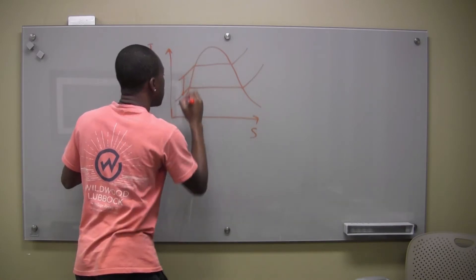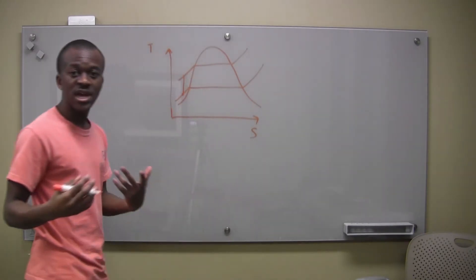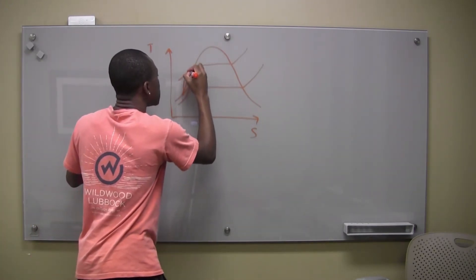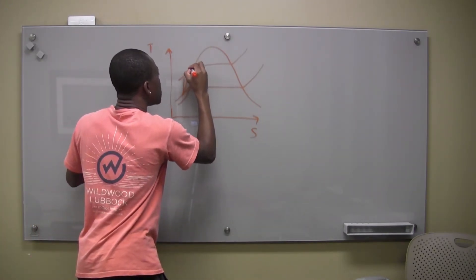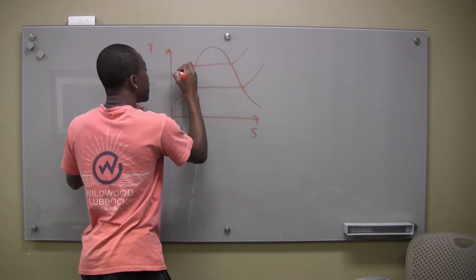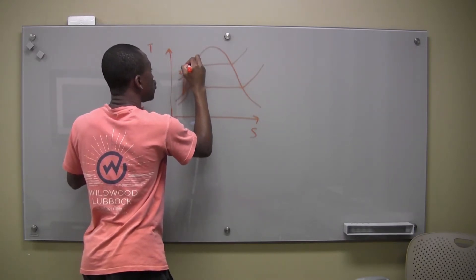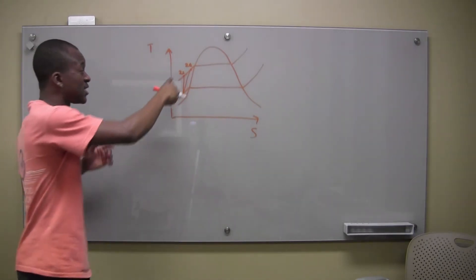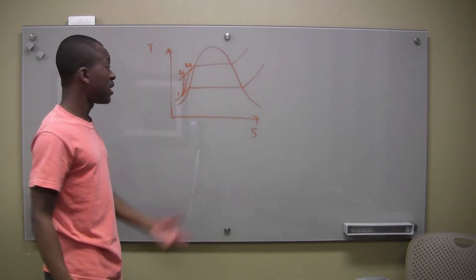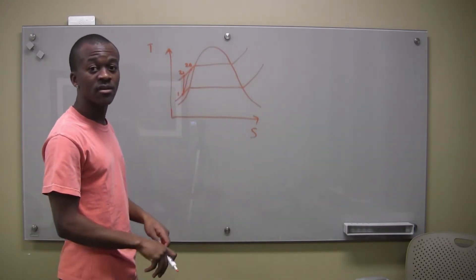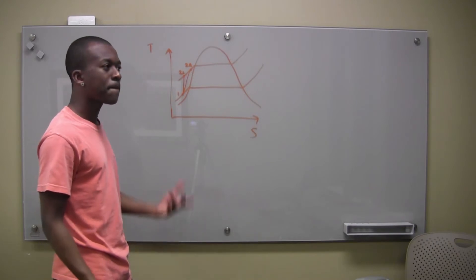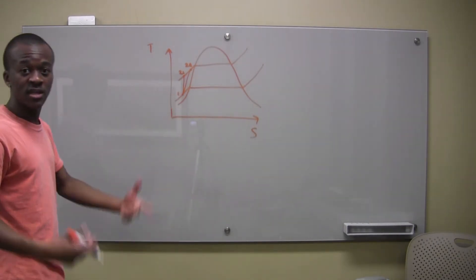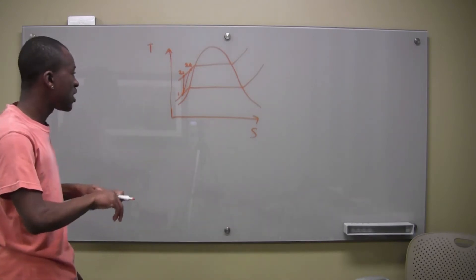For the TS diagram, we're going to draw two processes. One goes straight up — that's for the isentropic compressor — and then one that curves to the side. So we have our 2S point, which is the isentropic state for the second point, and our 2A point, which is the actual state. Both start from the same point one.